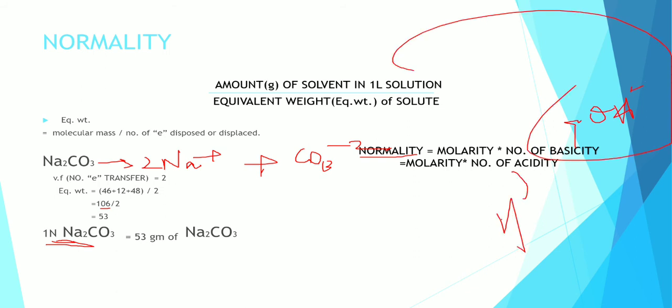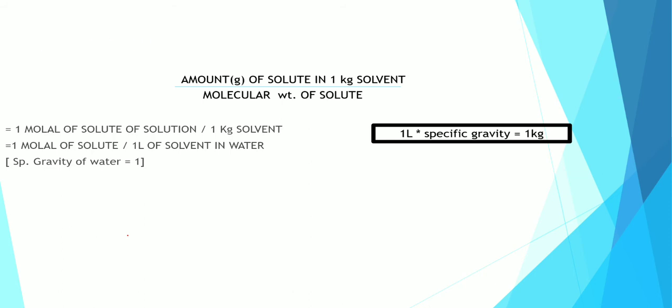The third is molality. The definition: the amount of solute in one kg solvent divided by molecular weight of solute. One molar of solute in one kg solvent. For water, the specific gravity is 1, so one liter or one kg is equal.